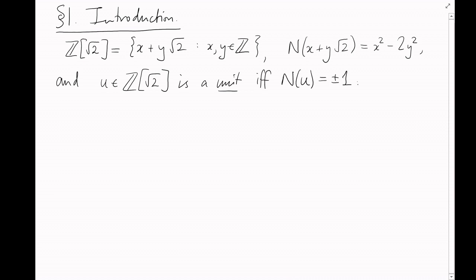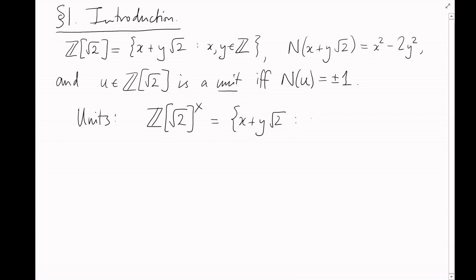That is, the set of units of ℤ[√2], which I'll denote ℤ[√2]×, is equal to the set of elements x + y√2 where x and y are integers and x² − 2y² equals plus or minus 1. So we need to solve this equation over the integers.